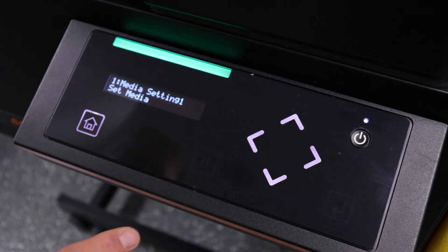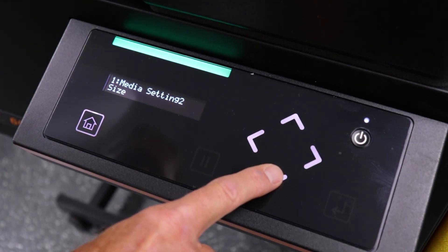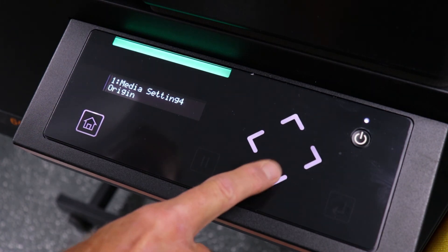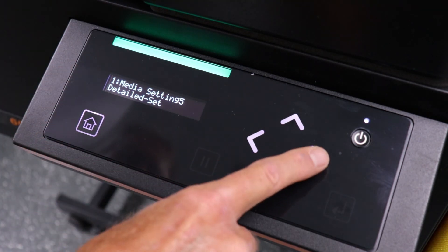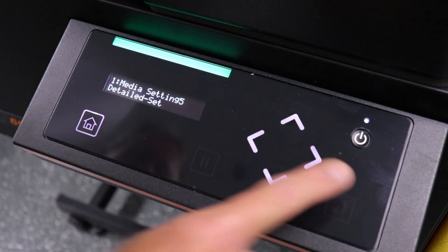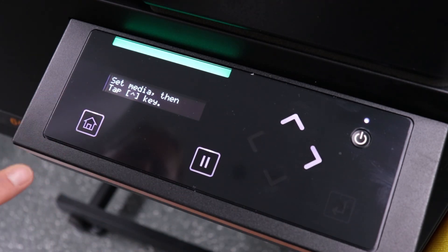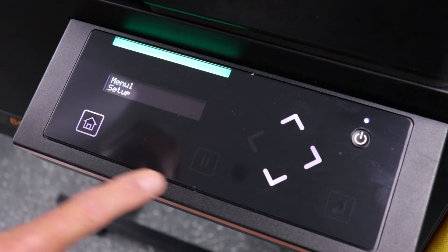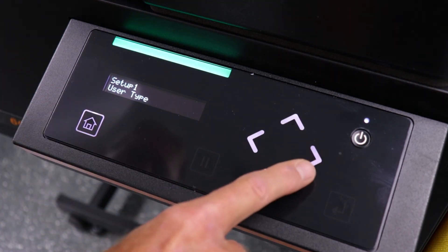Now we're going to scroll down to Detailed Set. Press the right arrow key, followed by the down arrow to turn off. Press the Enter key to apply it, and then the Home key to return to the main menu. Watch along now as we progress through the menus to turn off Detailed Set on all User Types 1 through 4.